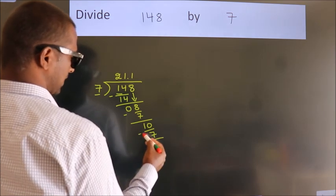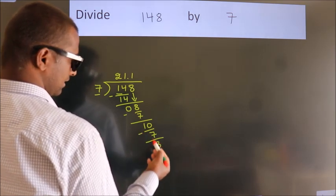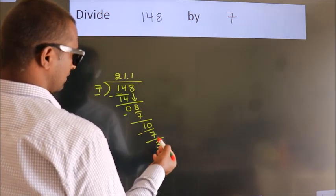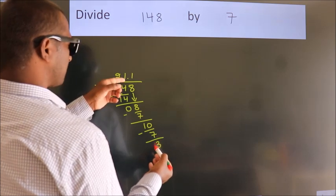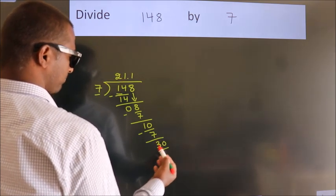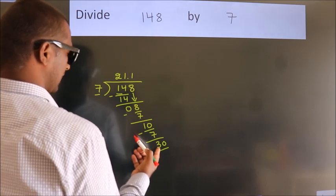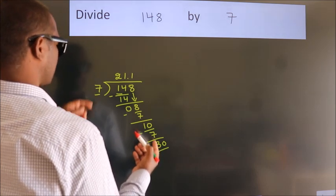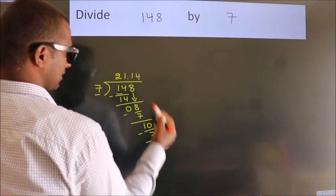Now we subtract, we get 3. After this, we already have the decimal, so directly take 0, so 30. A number close to 30 in the 7 table is 7 fours, 28.